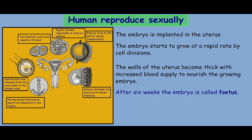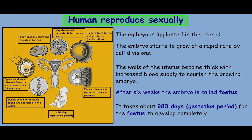After six weeks, the embryo is called a fetus. It takes about 280 days — also known as the gestation period — for the fetus to develop completely.